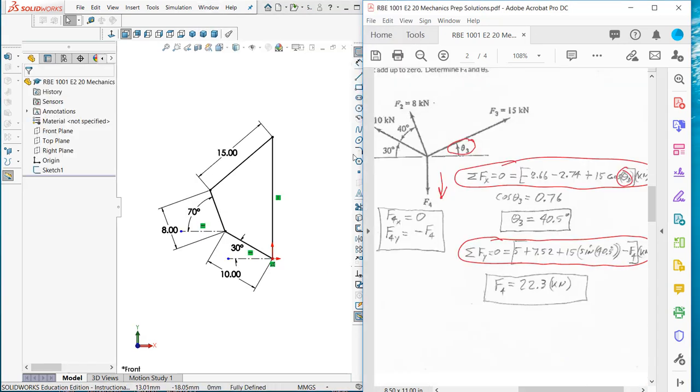Now we look at the other problem. We knew that this force was straight down. So again, I'm just adding these vectorially. They have to add up to zero.